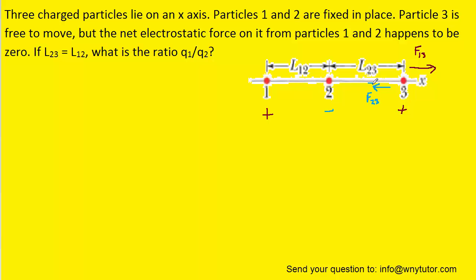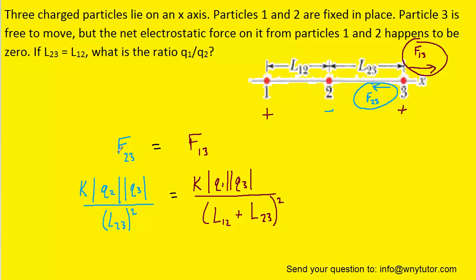Now, because charge 3 is in equilibrium, we know that that force F23 is equal in magnitude to F13. Each one of these forces is an electrostatic force, so it can be replaced with the Coulomb's Law expression. For F23, we have the Coulomb constant multiplied by the magnitude of charges 2 and 3 divided by this distance squared.